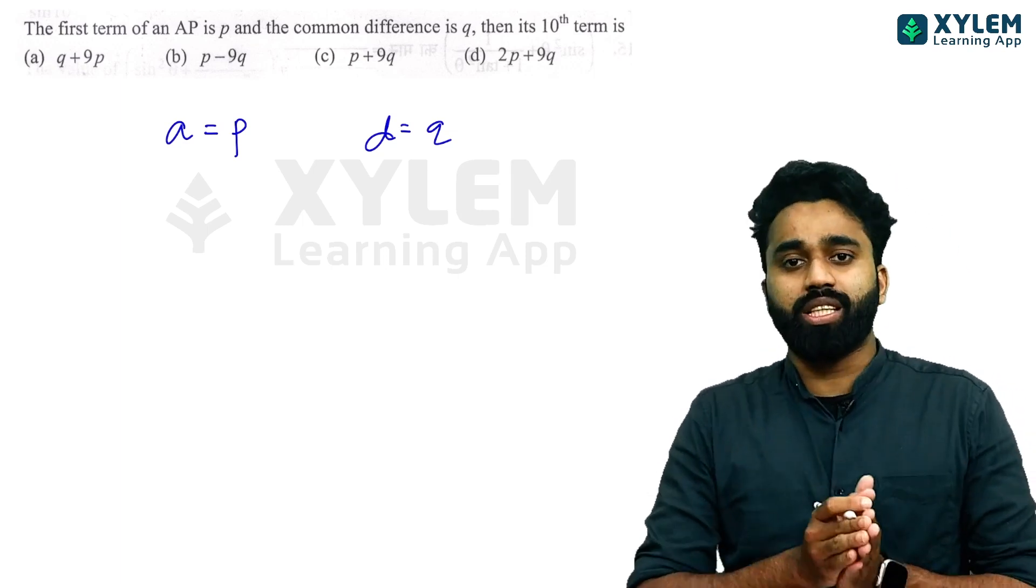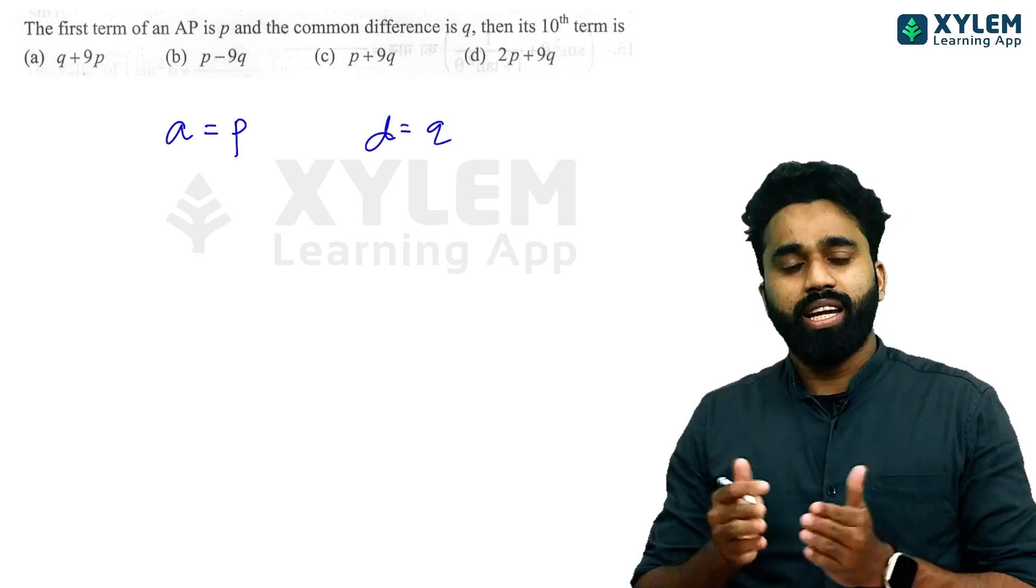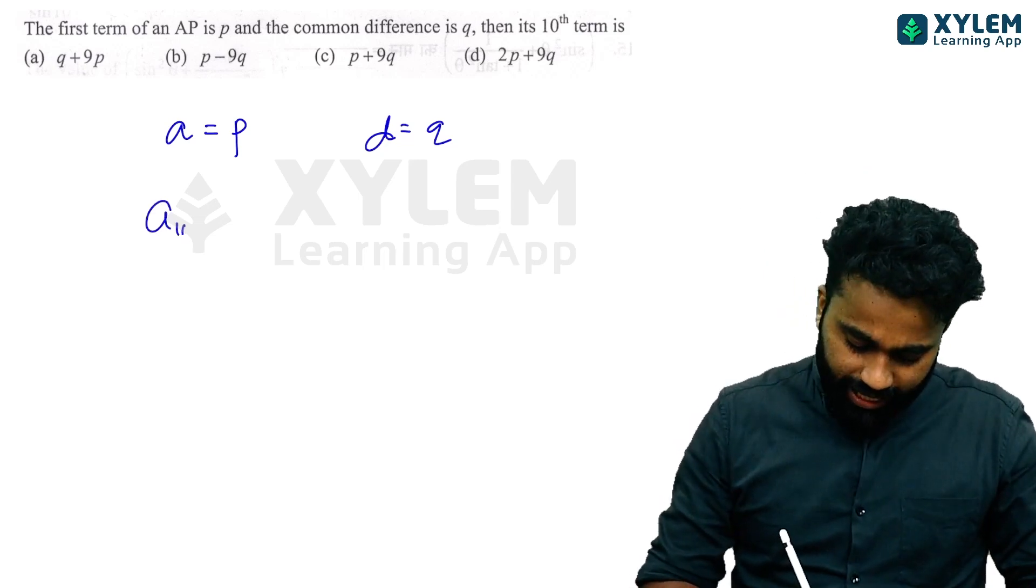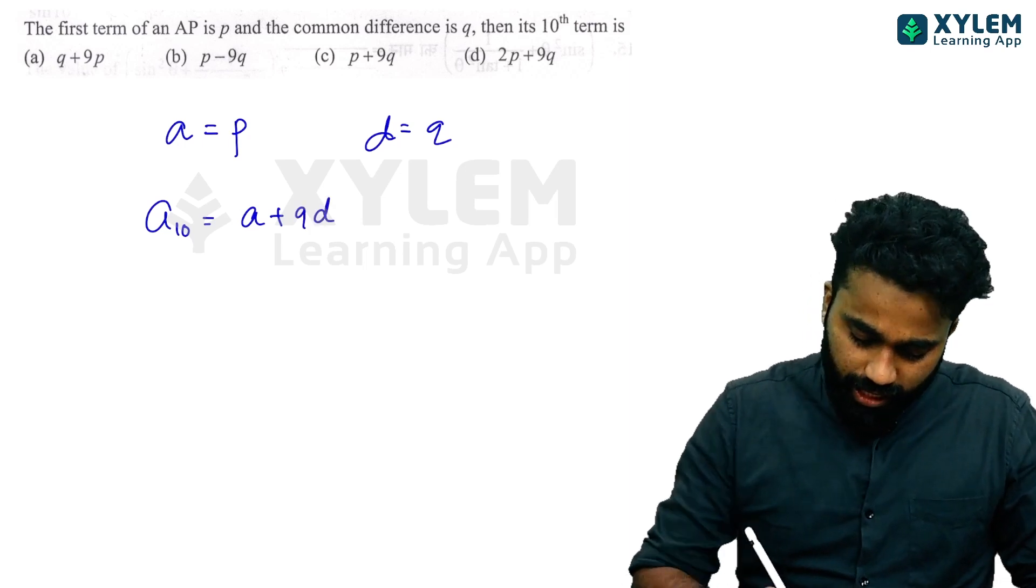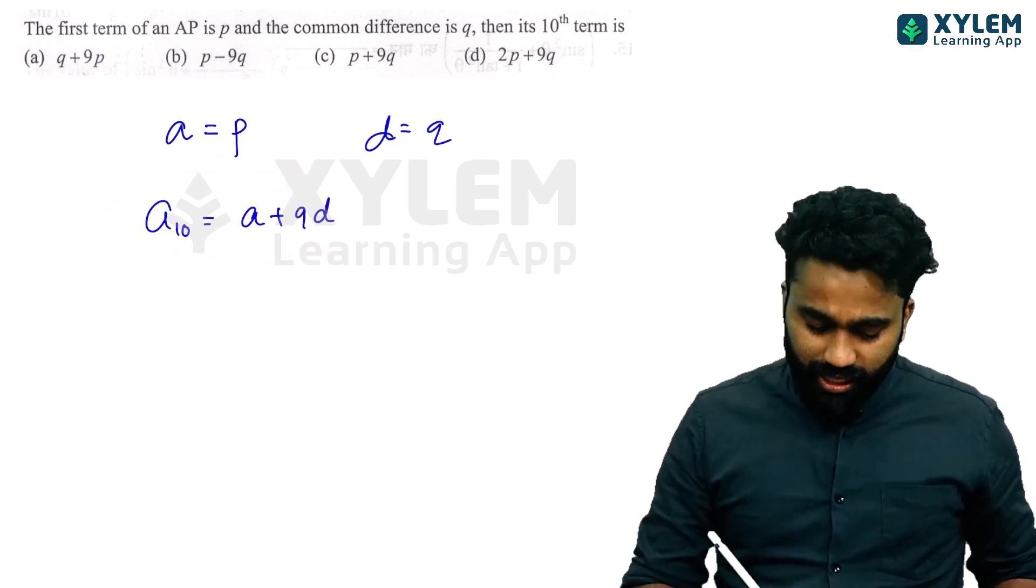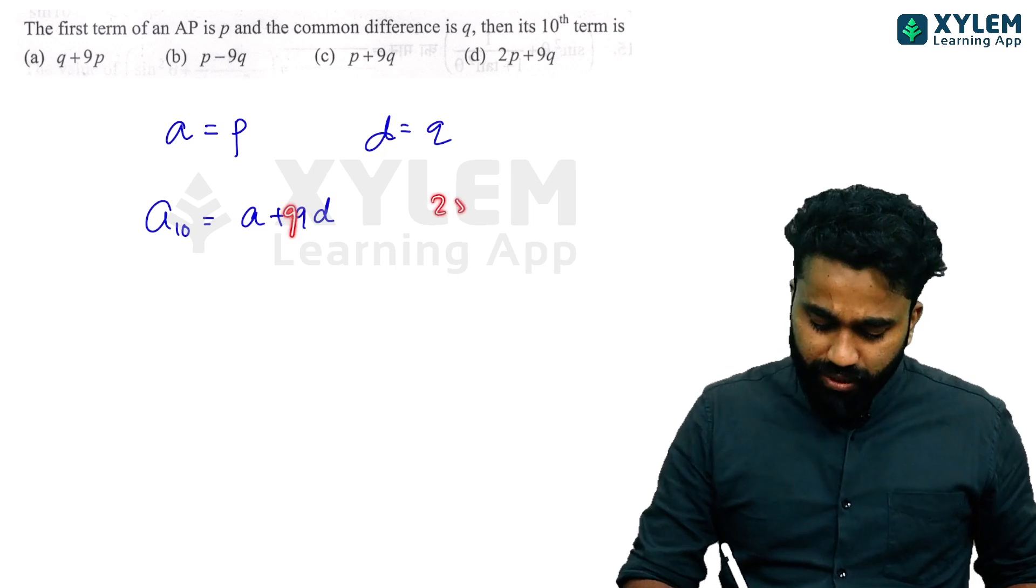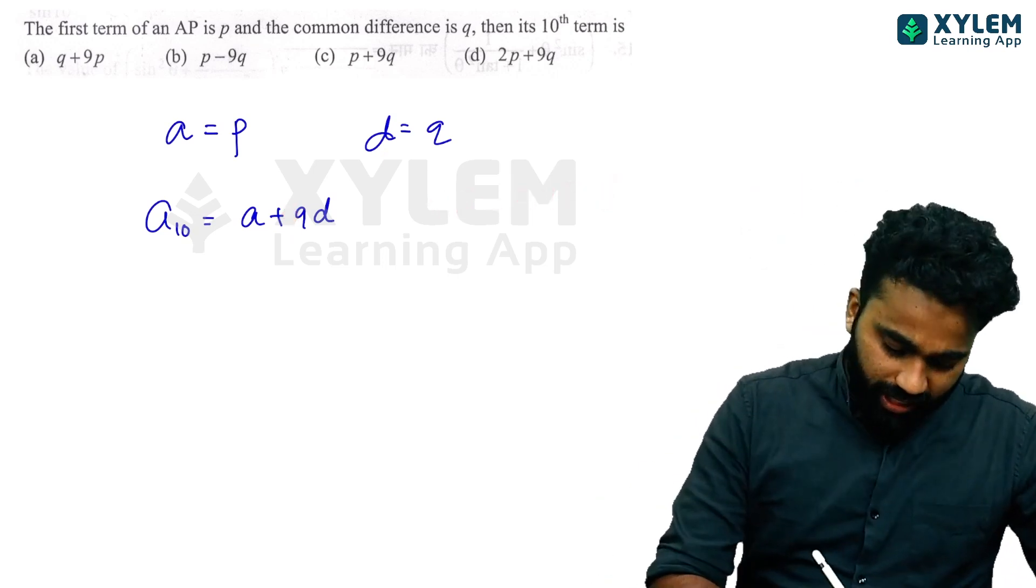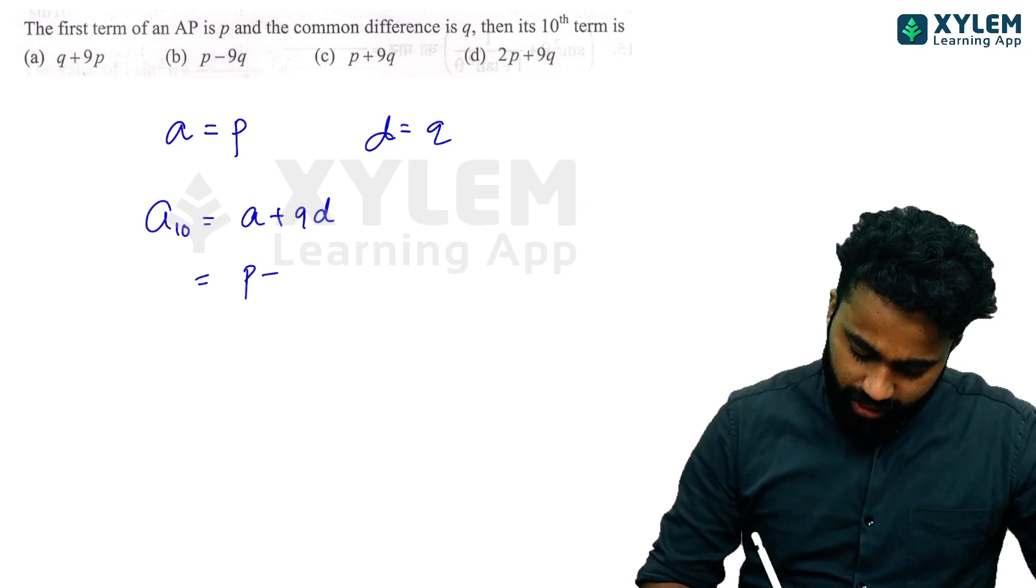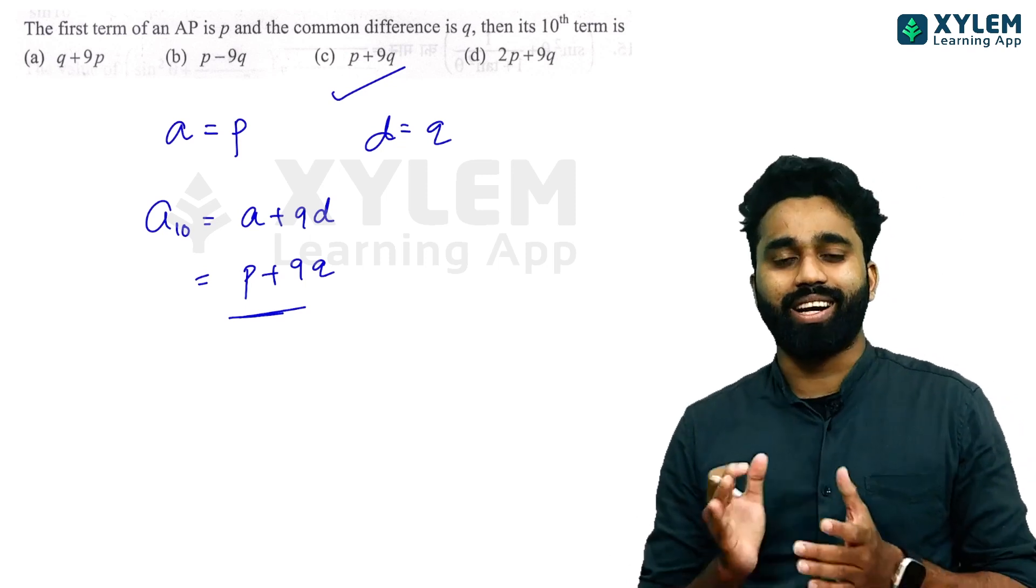Then what is the 10th term? Very simple. For the 10th term, a₁₀ equals first term plus nine times the common difference. Here a is p and d is q, so the answer is p plus 9q. Very simple, p plus 9q.